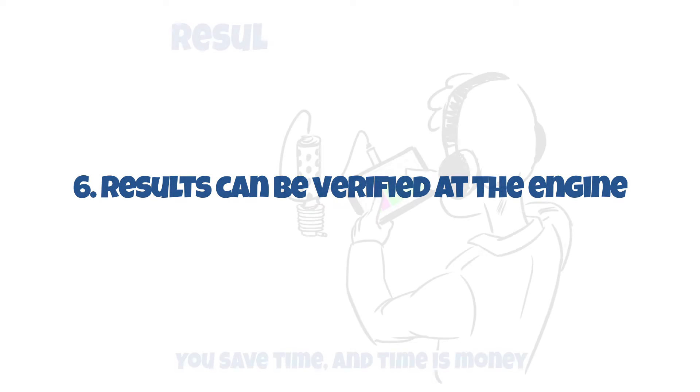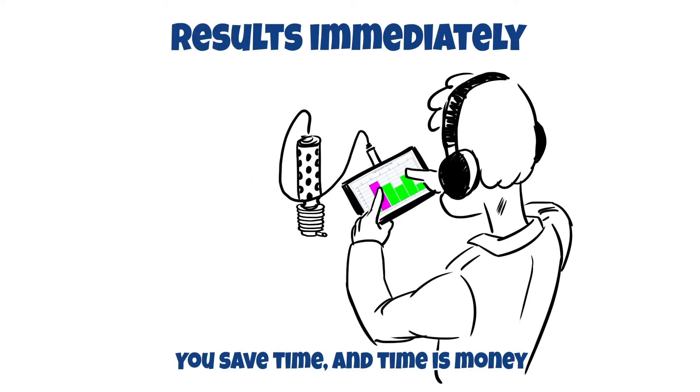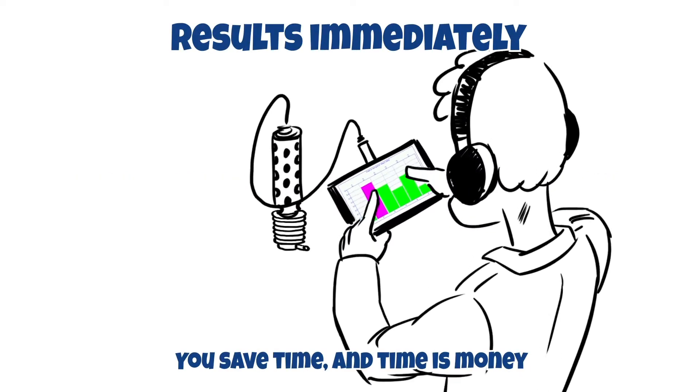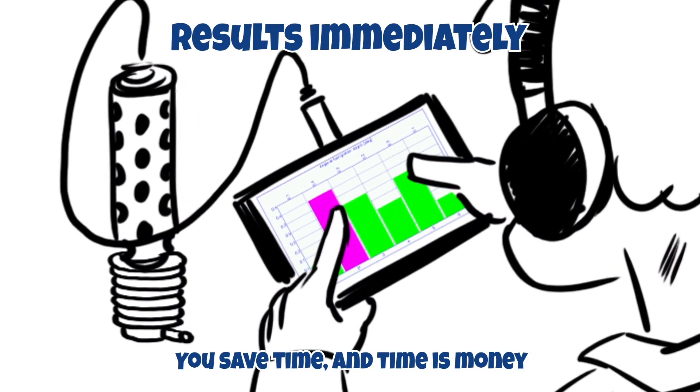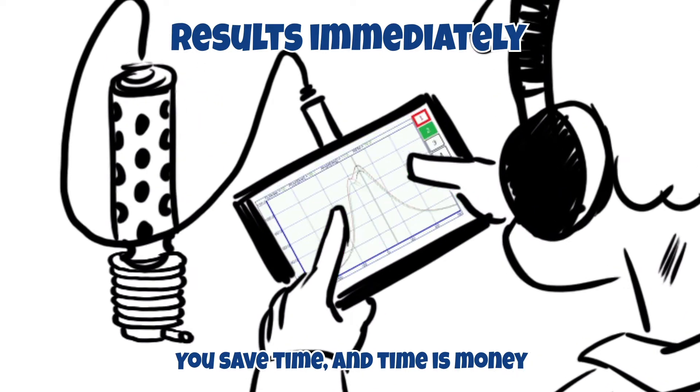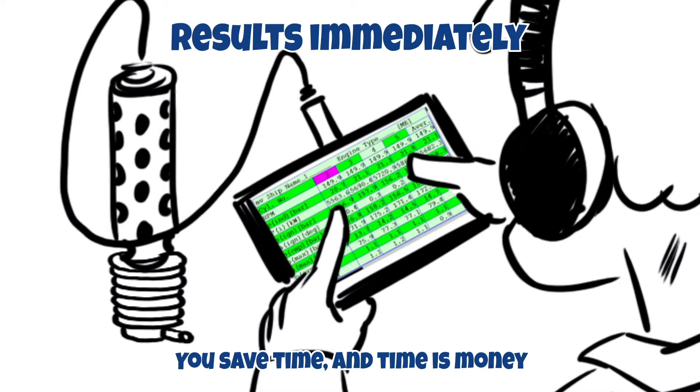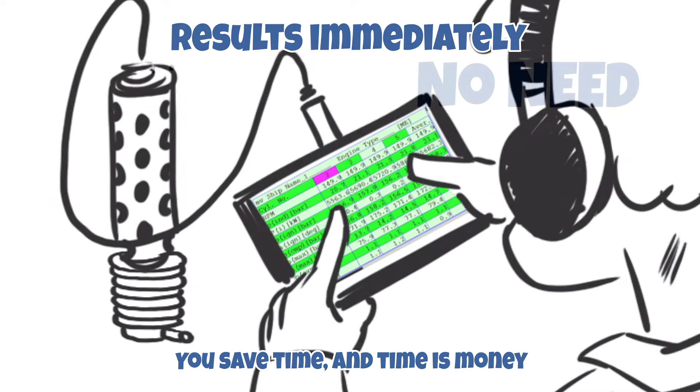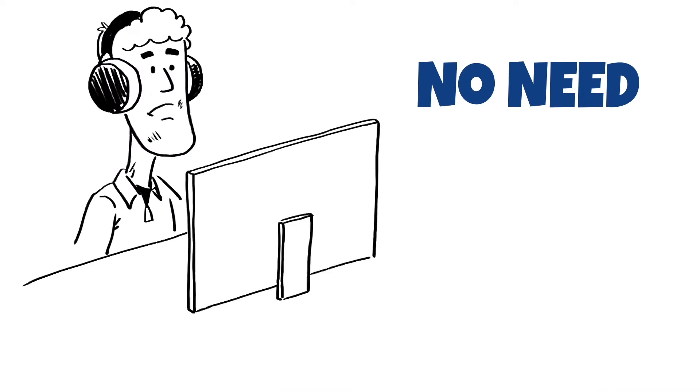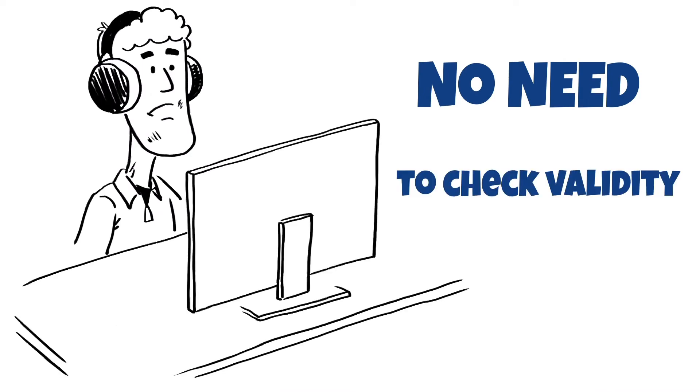Results directly at the engine. While with any other device you need to return to a computer to see calculated values, with a Primit X you see the complete measured and calculated results right after the measurement. This allows you to quickly scan the results to decide validity of the reading immediately.